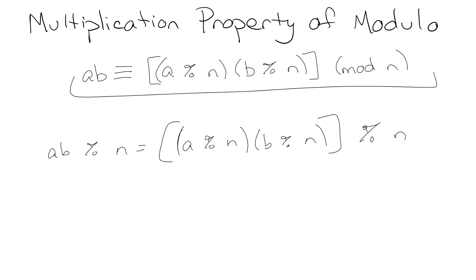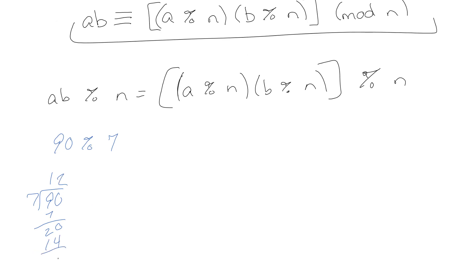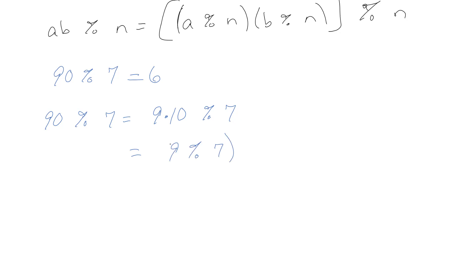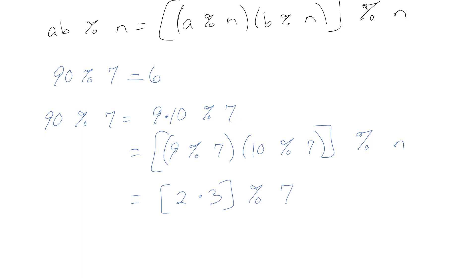Here's how it works in practice. Let's say you've got 90 mod 7. The answer should be 6. But let's pretend that long division is super hard — who wants to do the long division? So we have 90 mod 7. We can break that into 9 times 10 mod 7. That means we can break it into 9 mod 7, and then 10 mod 7, and then mod 7 that whole thing. We have to mod 7 the whole thing because sometimes when we multiply those together, we can get something bigger than 7. So 9 mod 7 is 2, 10 mod 7 is 3. So 2 times 3 is 6 mod 7, which is just 6.